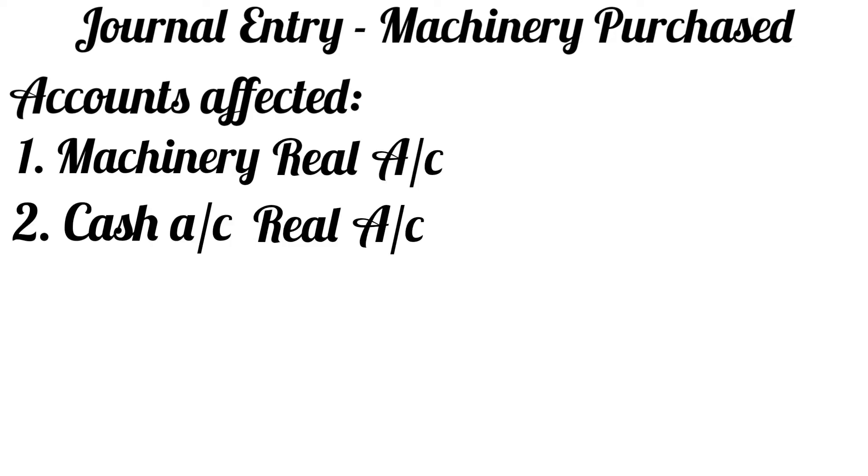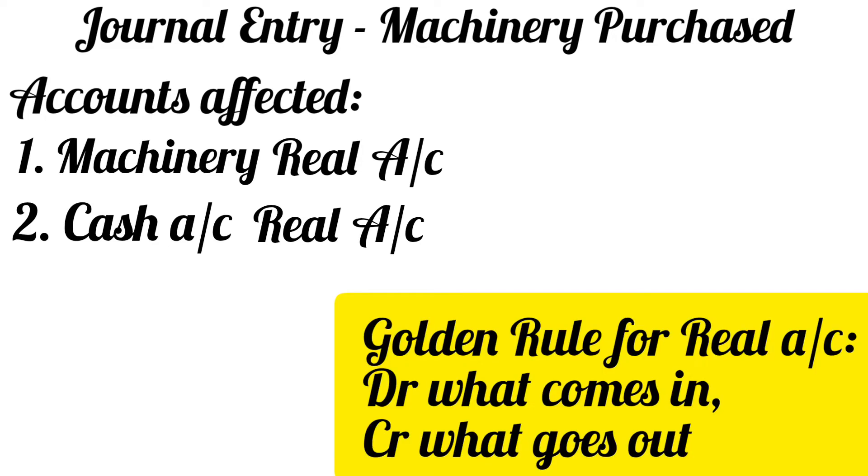The journal entry which we are discussing is machinery purchased. Let us assume that the machinery is purchased for cash. In that case, the two accounts that will be affected are machinery account and cash account. Both machinery and cash account are real accounts. The golden rule for real account says: debit what comes in, credit what goes out.